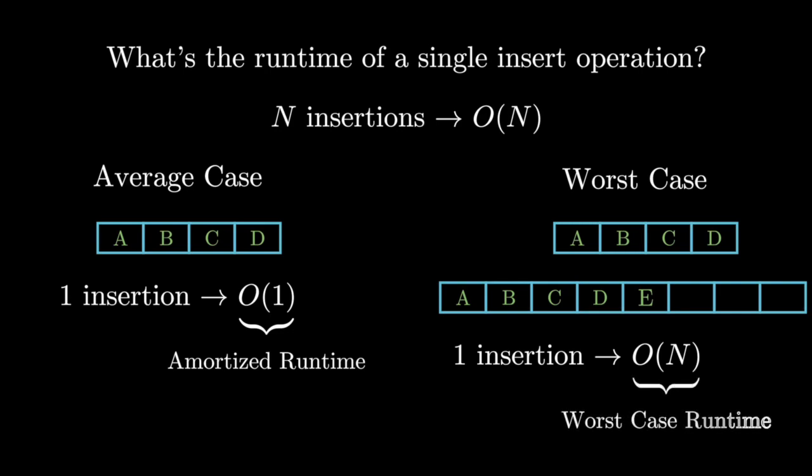And both of these perspectives are completely valid. What you'll see in most data structures courses and books is that the running time of the insert operation in a dynamic array is O of one amortized and O of n in the worst case.